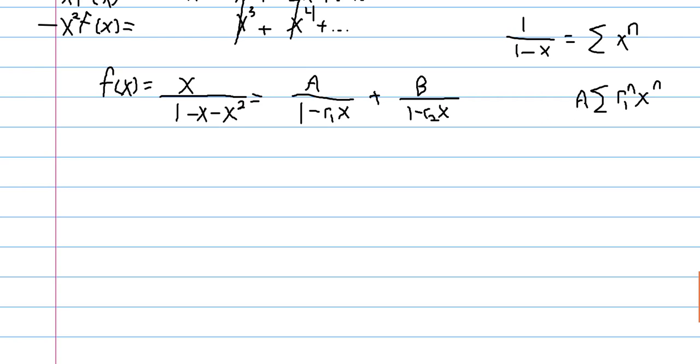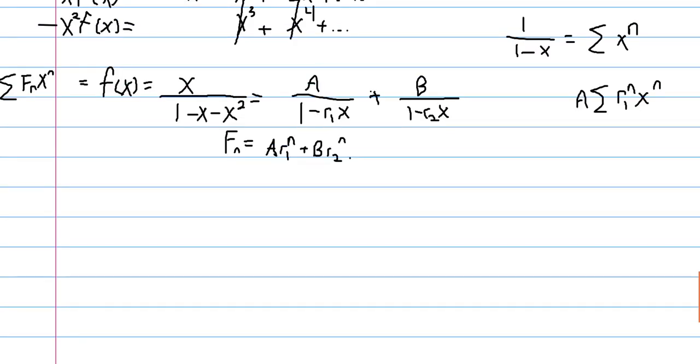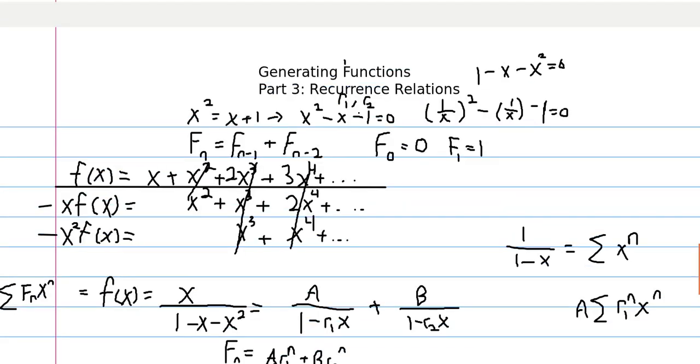But this is just saying that f of x is equal to an infinite sum of the nth Fibonacci number times x to the n. So what we're saying here is that the nth Fibonacci number is equal to a r1 to the n plus b times r2 to the n. And so we can use partial fraction decomposition, we can actually solve for a and b, or we can plug in values of n and solve for a and b.